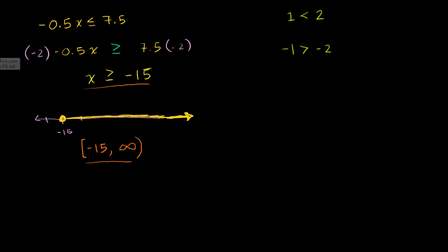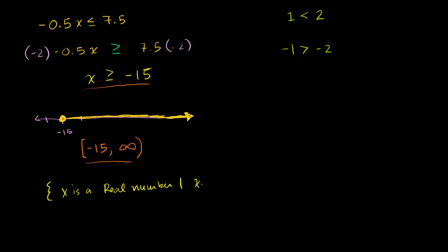You might also see set notation, where the solution is written as: the set of all x, where x is a real number such that x is greater than or equal to negative 15. That vertical line just means 'such that.' The curly brackets mean the set of all numbers. All three notations — the inequality, the interval notation, and the set notation — are all equivalent.